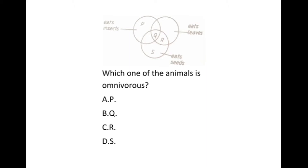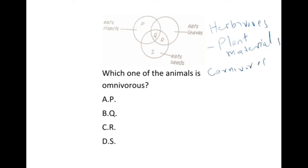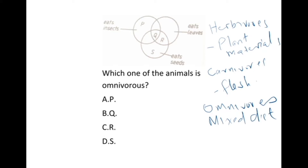When categorizing animals according to their feeding habits, we can group them into three groups. One, we have the herbivores — these are animals that feed on plant materials or vegetables. We also have the second group, carnivores — these feed on flesh. Then we have the third group, omnivores — these have a mixed diet; in other words, they feed on both flesh and vegetables.